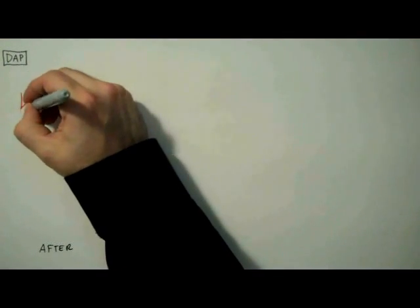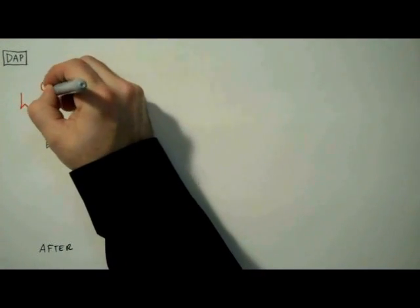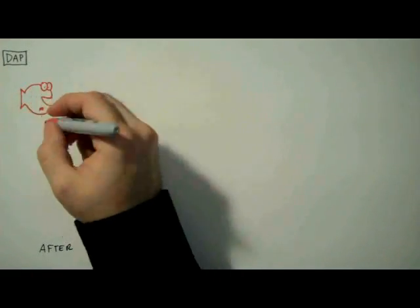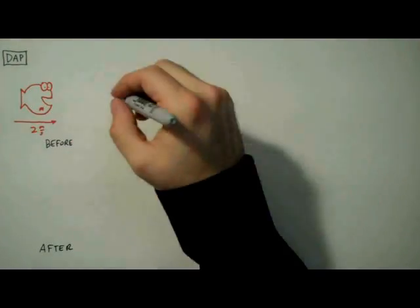Now with all collision problems we want to start by drawing before and after pictures. So before we have, it looks like a red fish moving to the right at two meters per second.